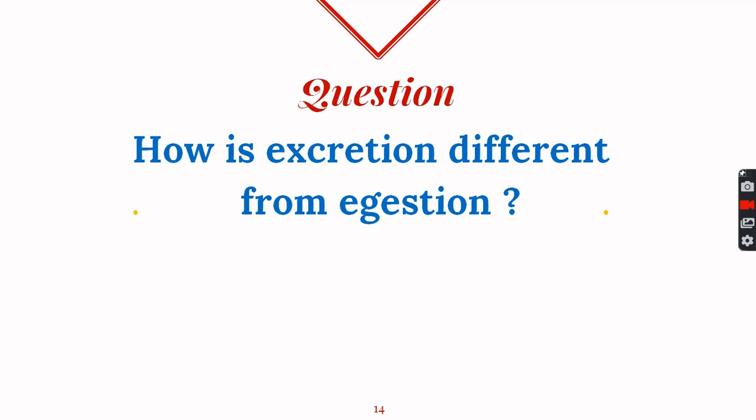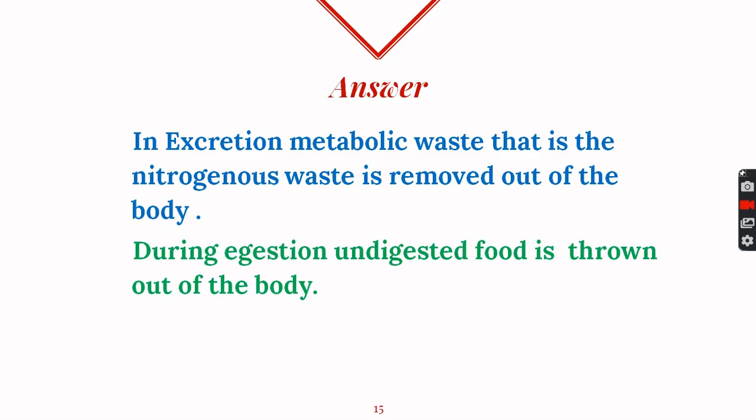Excretion is different from egestion. In excretion, metabolic nitrogenous waste is removed out of the body through the urethra with the help of the urinary system. During egestion, undigested food that is not needed inside the body is removed from the body through the anus with the help of the digestive system.